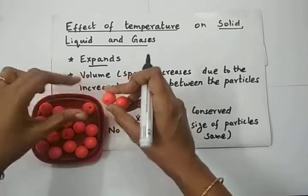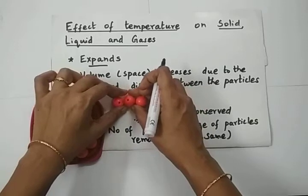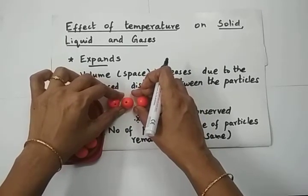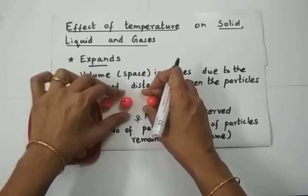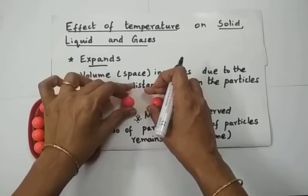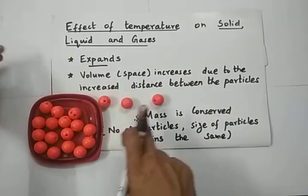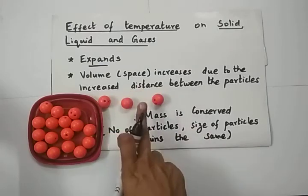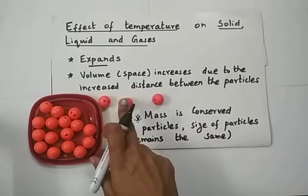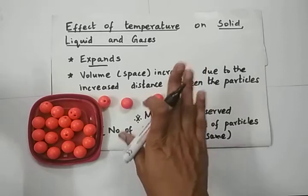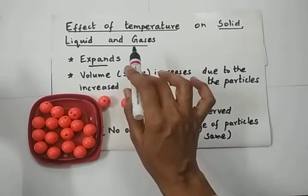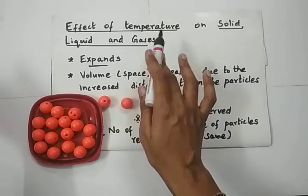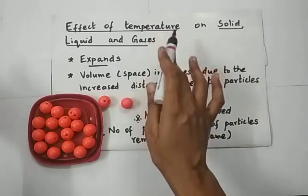What happens when the molecules move away from each other? Before heating, they will be very close to each other — there will be little space. But on heating, they will move a little apart from each other. The distance between the particles increases, so the space occupied will increase. Space is nothing but the volume. The volume increases — that is called expansion. When a substance is heated, it will undergo expansion. What is expansion? Increase in volume.